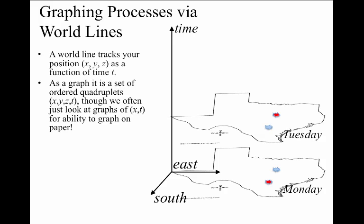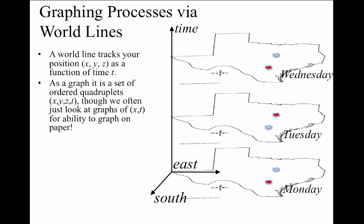Then we're going to want to graph what happens when, on Tuesday, at a later time, so further up the time axis, we end up in Dallas, the other red dot on the Tuesday picture. And suppose in our little formulation of this history, then we return to Austin back on Wednesday.